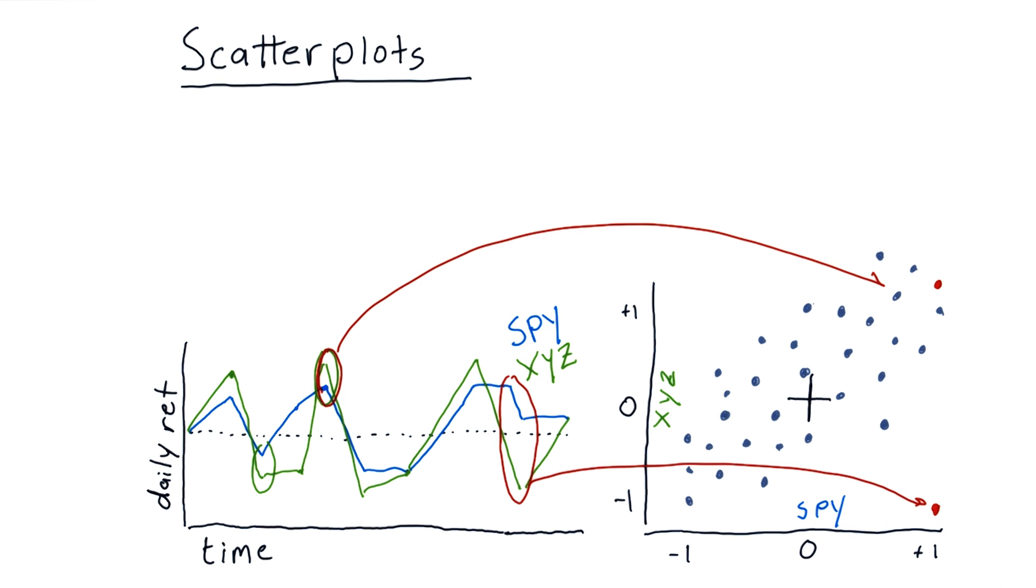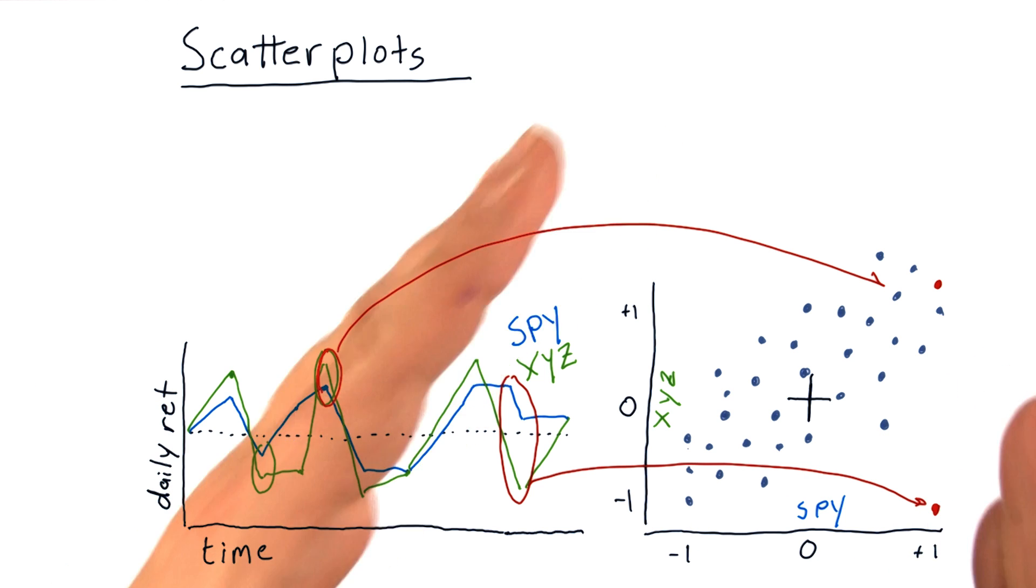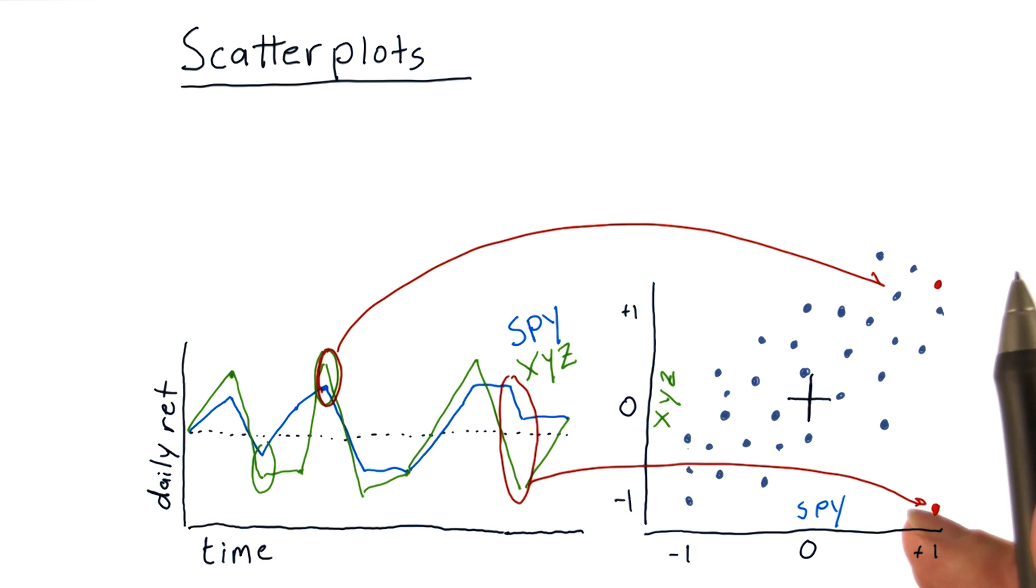If we were to continue this process for very many days over a long period of time, for most stocks, a trend appears, which is something like this, where you can sort of see there's a relationship here, maybe a linear relationship. However, the dots are somewhat scattered; they don't form a perfect line.